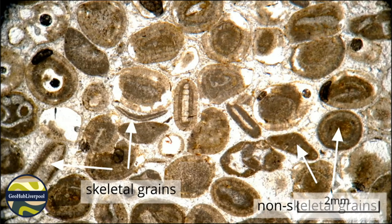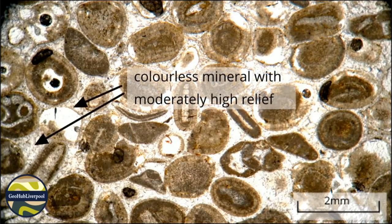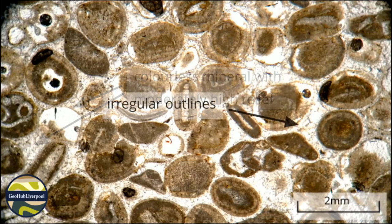Under plain polarised light, the skeletal and non-skeletal grains are surrounded by a colourless mineral with moderately high relief. This mineral is calcite. It is possible under plain polarised light to see the irregular outlines of these calcite crystals.